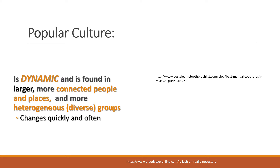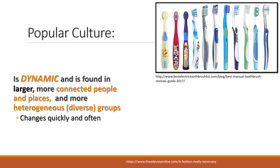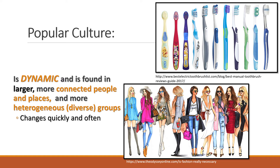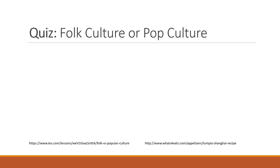Here's an example that directly contrasts our folk culture example: the modern toothbrush — some of which even have Disney characters on them. And then there's fashion. We know that fashion in the Western world changes often, really from year to year or season to season, which is very different from the formal wear image we saw before.